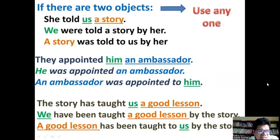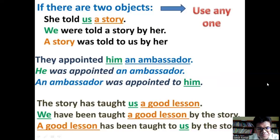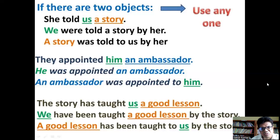If we take 'a story' in place of 'us,' then we say: 'A story was told to us by her.' In this case, you need to use an extra preposition 'to' to make the sentence meaningful. Whatever you do, you should always try to make the sentence a meaningful one.